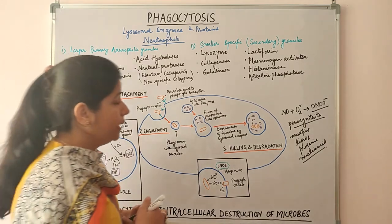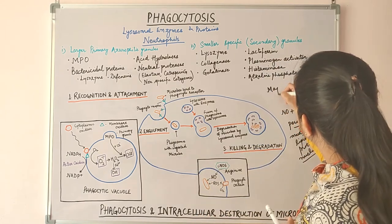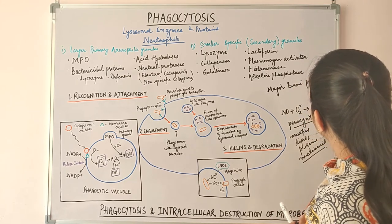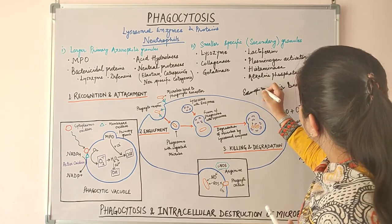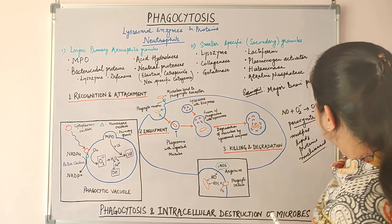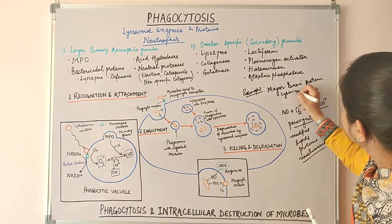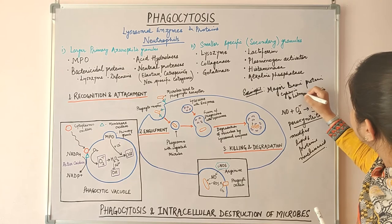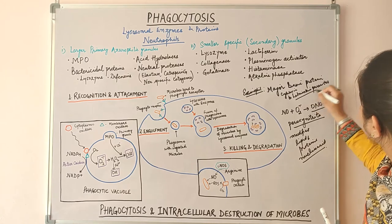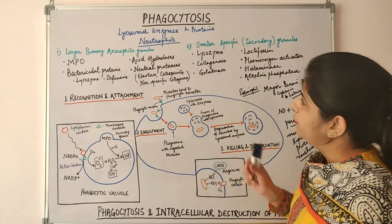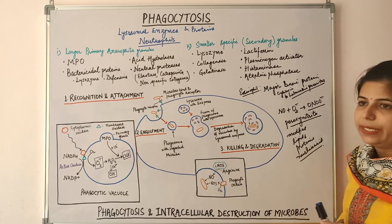Eosinophils also have granules which contain major basic protein. In eosinophils, bactericidal activity is not much, but it is cytotoxic to helminthic parasites. The neutral proteases also cleave C3 and C5 complement components and produce a kinin-like peptide from kininogen, and these components act as mediators of inflammation.